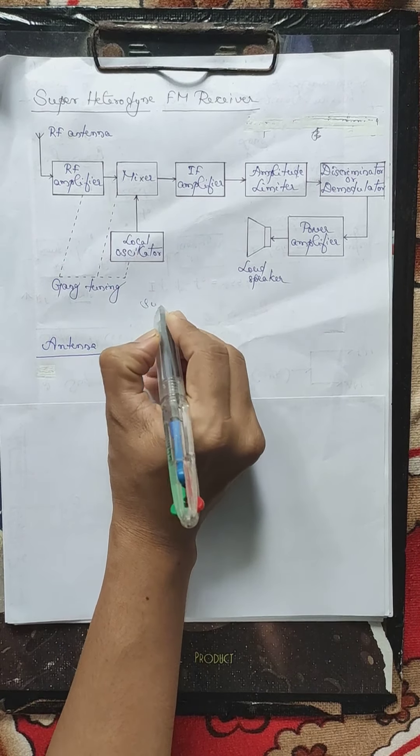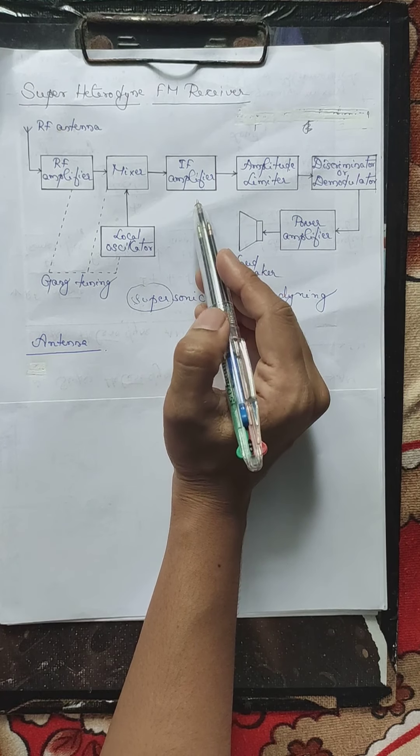Looking at the block diagram of the receiver, up to the IF amplifier the block diagram is similar to that of the superheterodyne AM receiver which we have already studied. So we can use the same explanations for the RF amplifier, mixer, local oscillator, and IF amplifier blocks as used in the superheterodyne AM receiver.